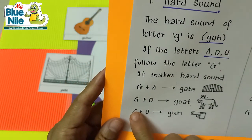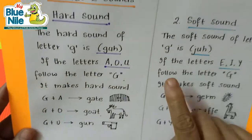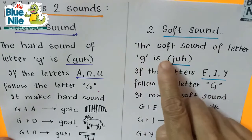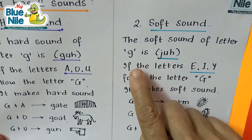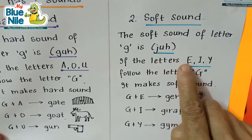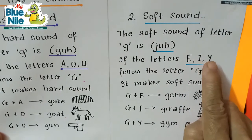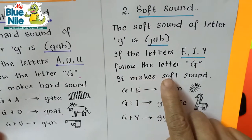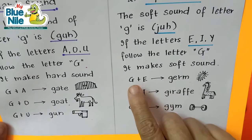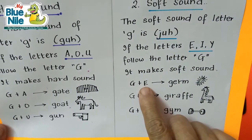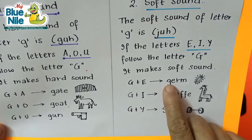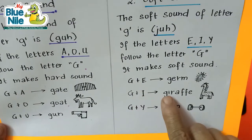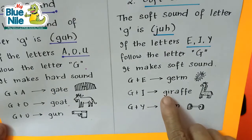The soft sound of letter G is J. If the letters E, I, or Y follow the letter G, it makes the soft sound. G plus E: germ. G plus I: giraffe. G plus Y: gym.